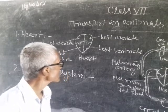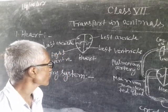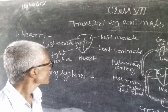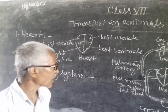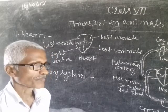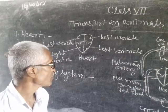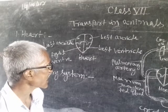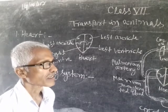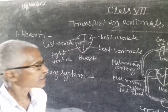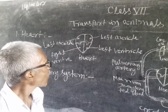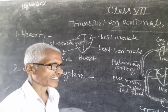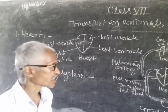It is separated into two parts by a partition called septum. Septum is made of muscle. The left side of the heart has oxygenated blood and the right side of the heart has deoxygenated blood.